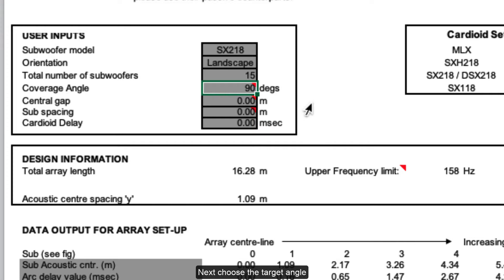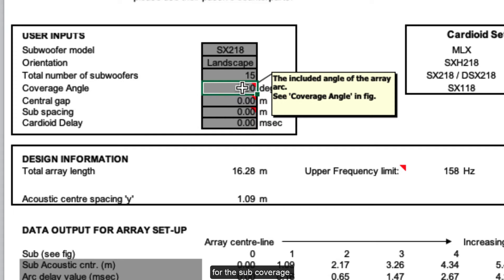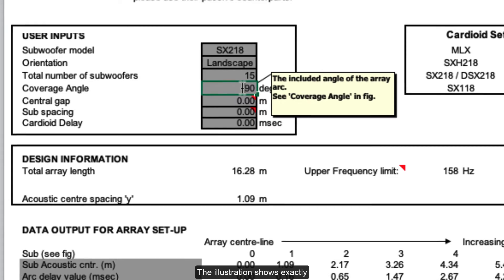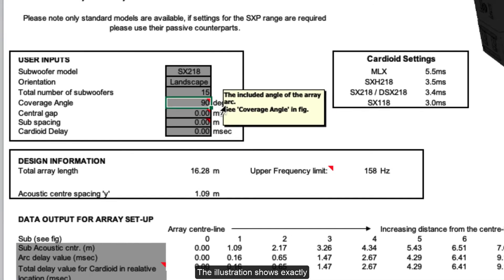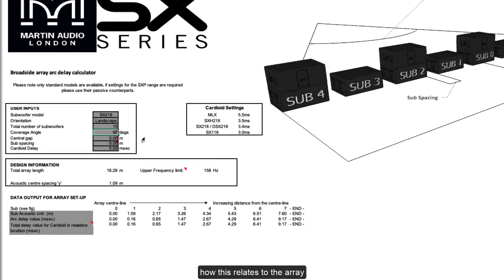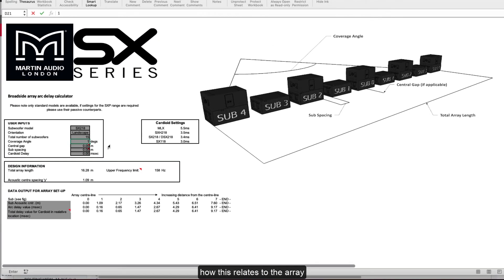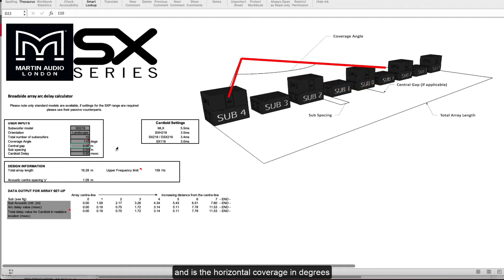Next, choose the target angle for the sub coverage. The illustration shows exactly how this relates to the array and is the horizontal coverage in degrees that you would like to achieve from the array.